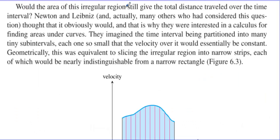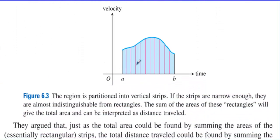Would the area of this irregular region still give the total distance traveled over the time interval? Sure. Newton and Leibniz, and many others who had considered this question, thought that it obviously would, and that is why they were interested in a calculus for finding areas under curves. They imagined the time interval being partitioned into many tiny subintervals, each one so small that the velocity over it would essentially be constant. Geometrically, this was equivalent to slicing the irregular region into narrow strips, each nearly indistinguishable from a narrow rectangle — tiny, tiny, tiny little rectangles.